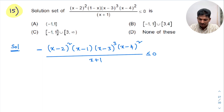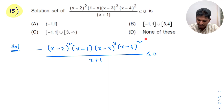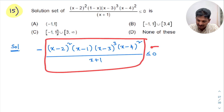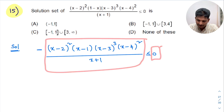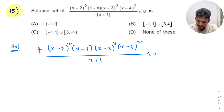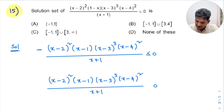Now there is a minus sign here that I don't want. To convert to wavy curve standard form, I will multiply both sides of the inequality by -1. By the rules of inequalities, multiplying by a negative number reverses the inequality sign. So minus of minus becomes plus, and ≤ 0 changes to ≥ 0.